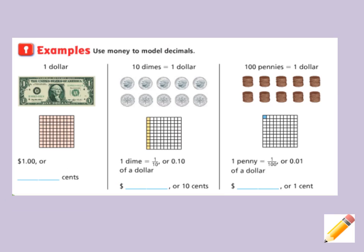Now let's look at some examples and use money to model decimals. If I have a dollar, that means I have one hundred pennies, so a dollar is equivalent to one hundred cents. If I have ten dimes, that's equal to one dollar.